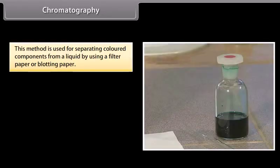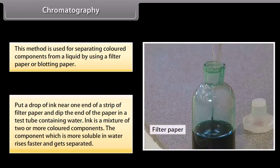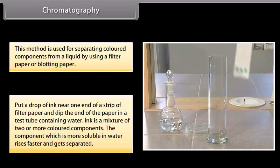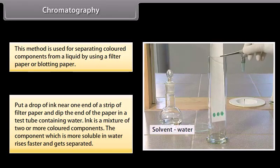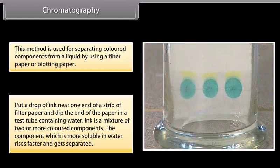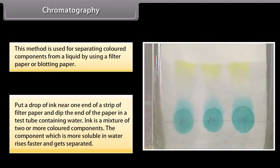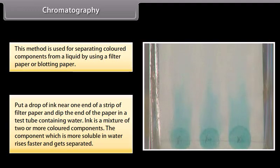Chromatography. This method is used for separating colored components from a liquid by using filter paper or blotting paper. Put a drop of ink near one end of a strip of filter paper and dip the end of the paper in a test tube containing water. Ink is a mixture of two or more colored components. The component which is more soluble in water rises faster and gets separated.